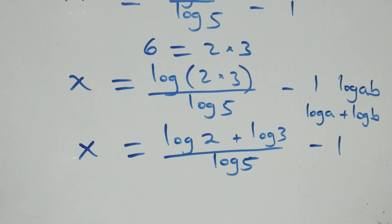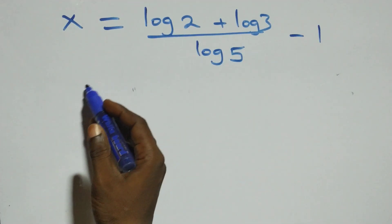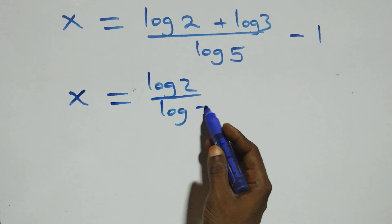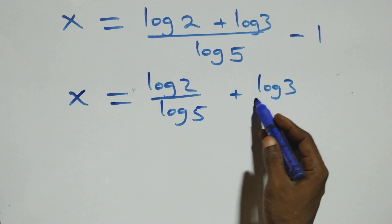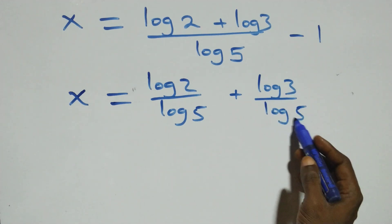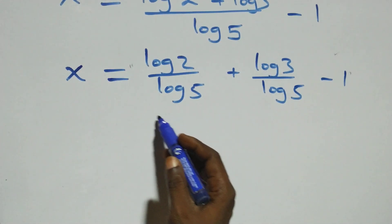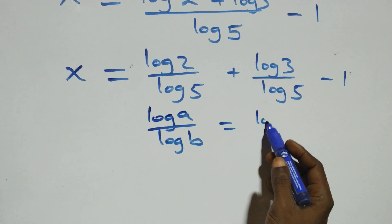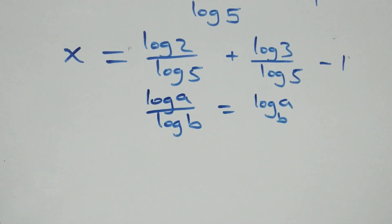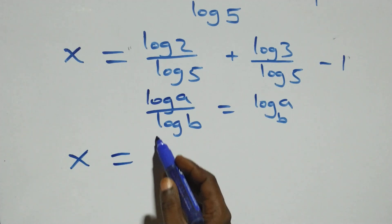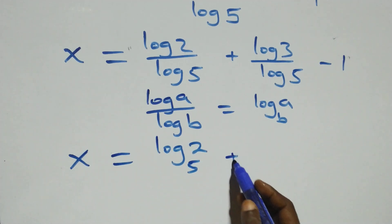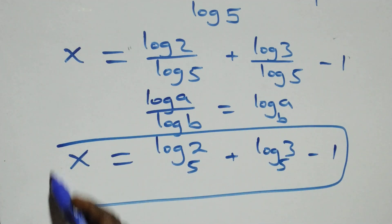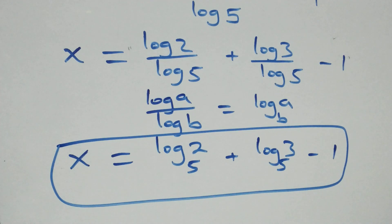Then here we have x equals to log 2 over log 5 plus log 3 over log 5 then minus 1. So here we have the final value of x equals to log 2 base 5 plus log 3 base 5 minus 1.